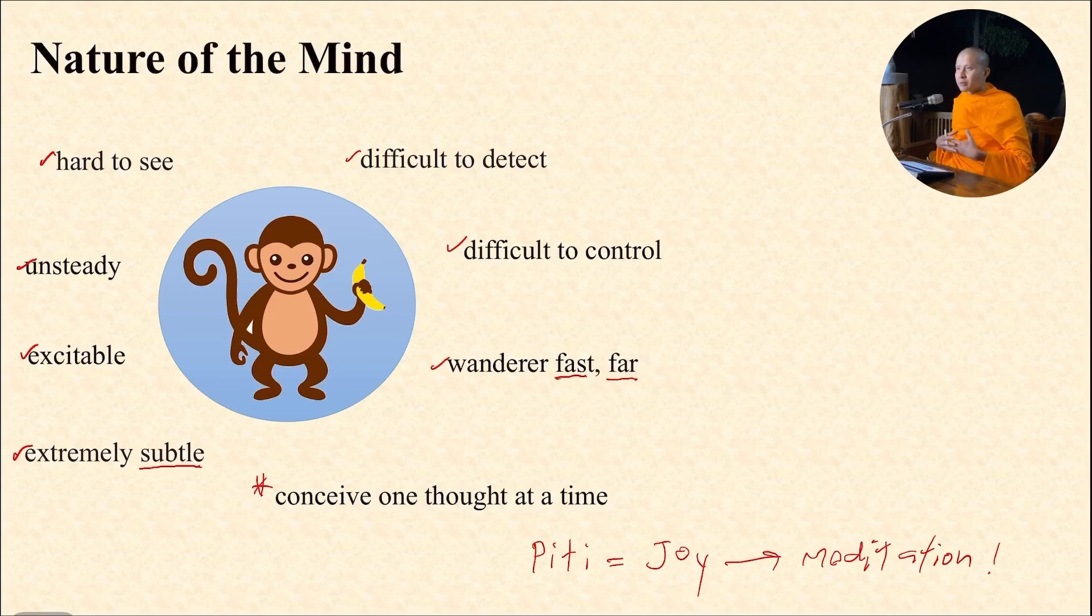Sometimes you share loving-kindness. Let's say you get angry at someone and you cannot meditate. You may start off with sharing loving-kindness. You think of the good things that that person did to you. Perhaps it helps your mind to relax, and then you can continue to meditate. So keep your mind joyful.